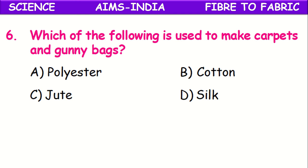Which of the following does not belong to the group formed by the others? The group here is fibers used for making carpets and gunny bags. The fiber used for making carpets and gunny bags is jute, because it has a rough texture. So jute is used for making all these.